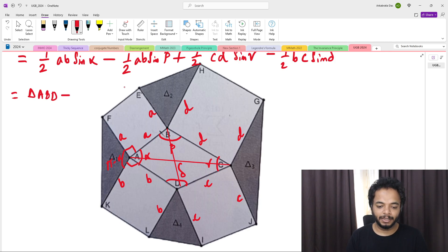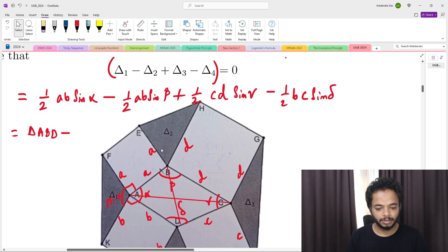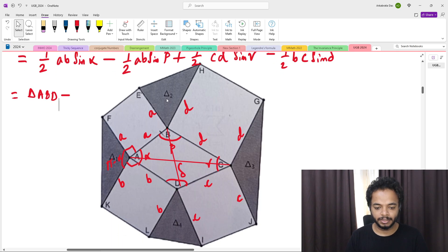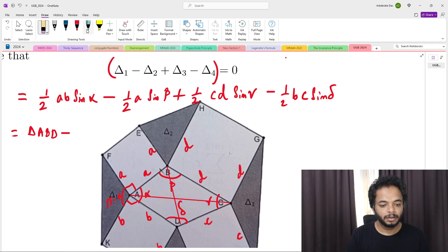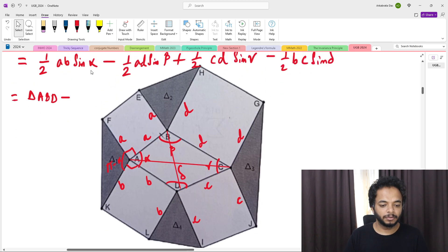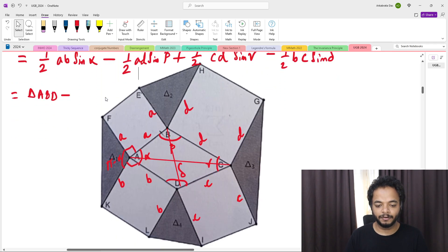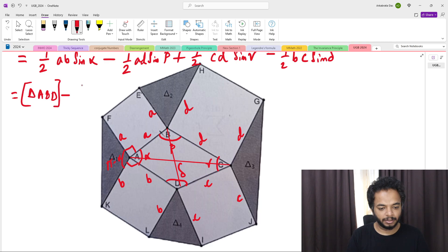Then minus half of, I think I made a mistake here, delta 2 is ad sin beta. This is basically half ad sin beta, which is nothing but area of triangle ABC.